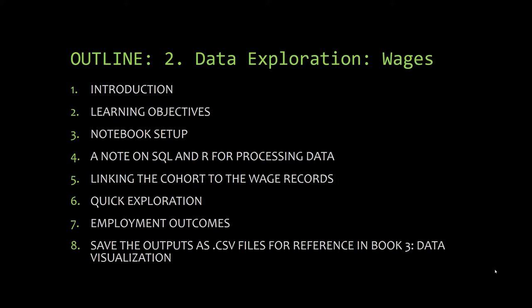Part 4 considers the complementary nature of SQL and R for data processing, and as you will see, is particularly relevant for what we are doing in this notebook. In Part 5, we're going to link the cohort you created in the first set of notebooks to the Tennessee wage data. In Part 6, we do a bit of exploration to determine how many people are working and how many jobs we're dealing with. In Part 7, we consider a universally interesting aspect of education — how much money do people earn relative to their field of study? At the conclusion of our examination in Part 8, we'll save our results as CSV files for use in Notebook 3, the Data Visualization Notebook.